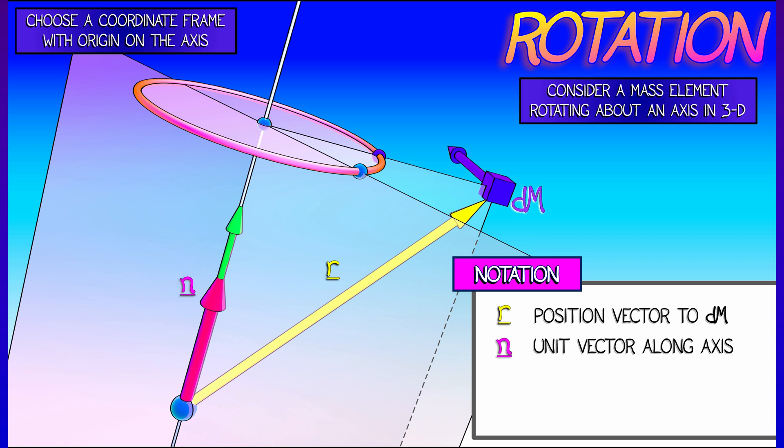I'm going to let n be the unit vector along the axis of rotation that is pointed in the appropriate direction. If I say that v is the velocity of that mass element rotating about the axis, if v is the velocity vector,